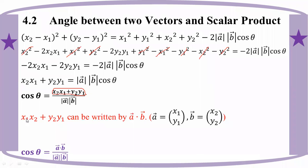Then we will get S1, S2 plus 1, 2. All of this can be written as the scalar product. Then we will get a scalar product. Vector A into vector B — we call this the scalar product.